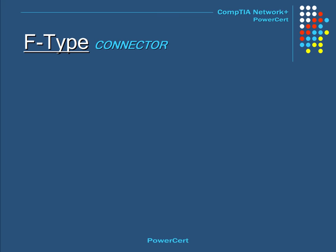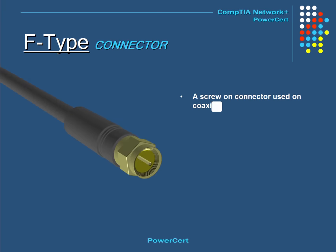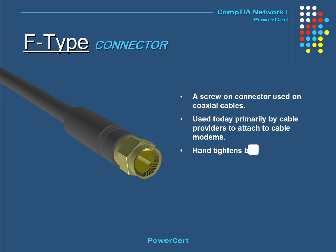This connector is called the F-type. This is a threaded connector typically used on coaxial cables and is primarily used by cable providers to attach to cable modems. The F-type hand tightens by an attached nut.